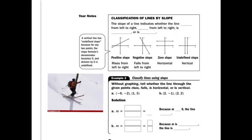Classification of lines by slope: the slope of a line indicates whether the line from left to right rises, falls, is horizontal, or is vertical.